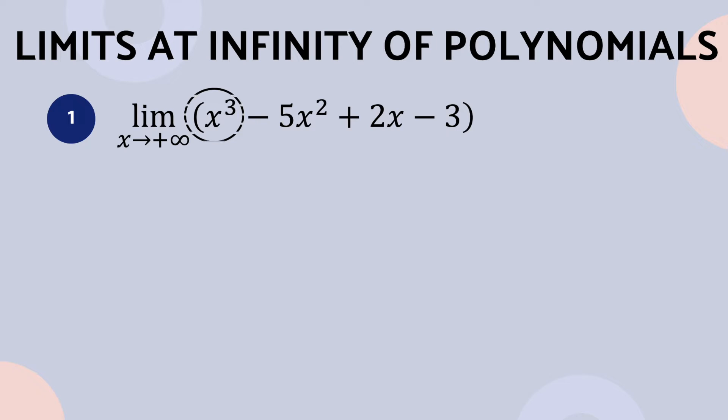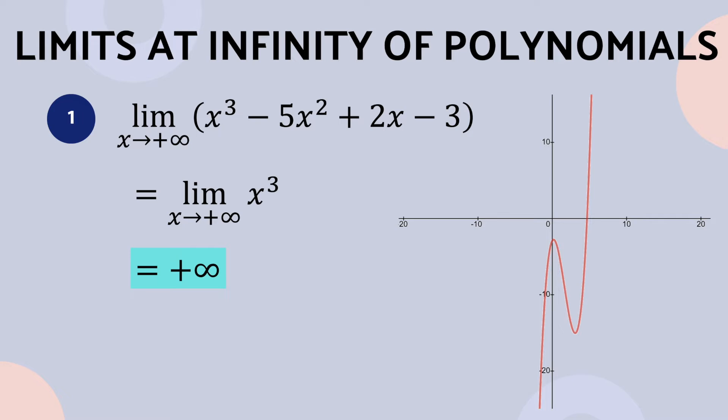According to theorem 1, which states that the limit for any positive odd integer n as x approaches positive infinity is equal to positive infinity, then we can say that the outputs for the expression x cubed are increasingly large positive numbers. As you can see in the graph, the right-hand limit of the function is positive infinity.